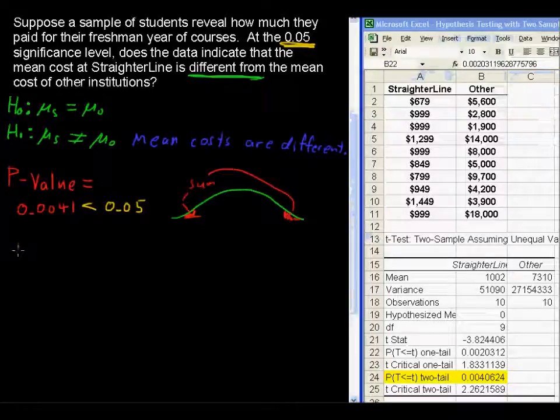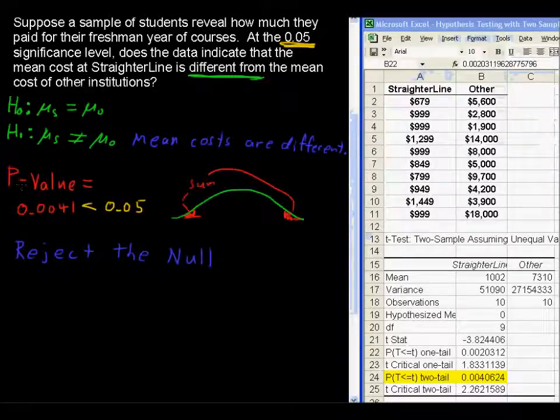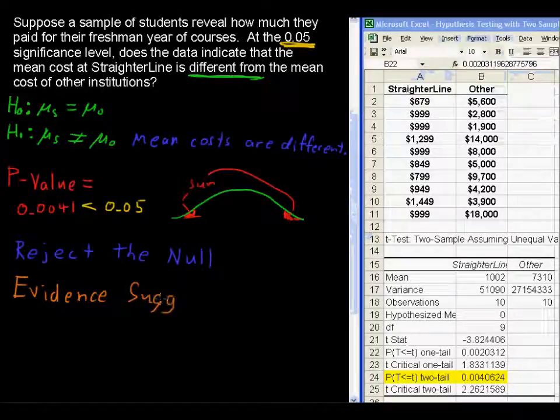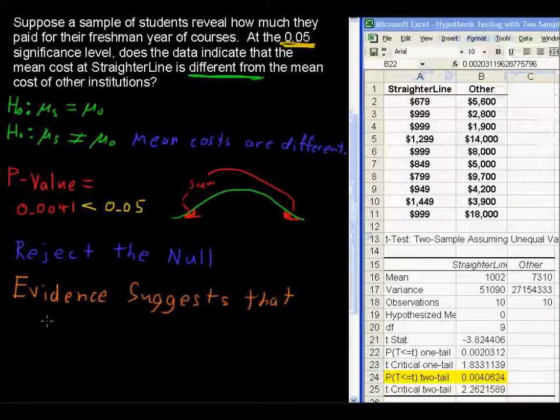So if the p-value is low, reject the null hypothesis. So that is our decision, to reject the null hypothesis. Our conclusion, in the end, will be evidence suggests that they are different. And we just have to stay strict to this. We don't want to lead the question into what we see as less or greater than. We just say they are different. So evidence suggests that the mean costs are different.